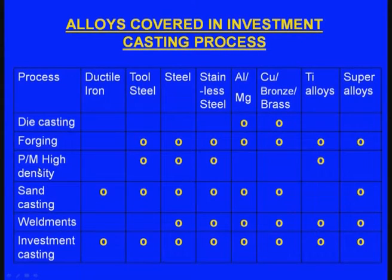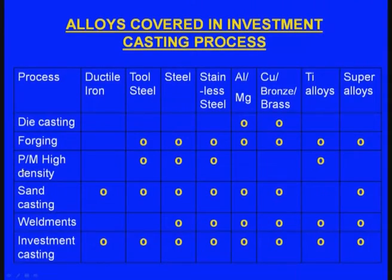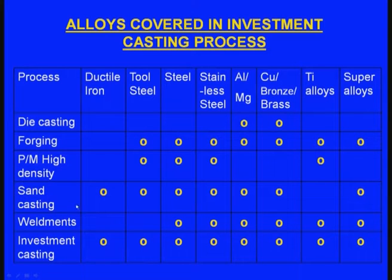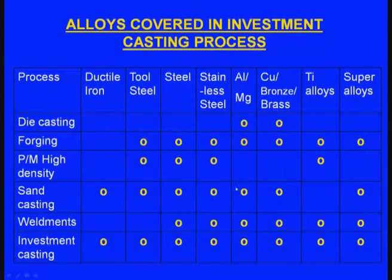In powder metallurgy, ductile iron cannot be produced, whereas tool steel, steel, stainless steel and titanium alloys can be produced. In sand casting, ductile iron, tool steel, steel, stainless steel, aluminum, magnesium, copper, bronze and brass alloys can be produced, whereas titanium alloys cannot be produced, but super alloys can be. In welding, only steel, stainless steel, aluminum, magnesium, copper, bronze, titanium alloys and super alloys can be produced — ductile iron and tool steels cannot be welded.